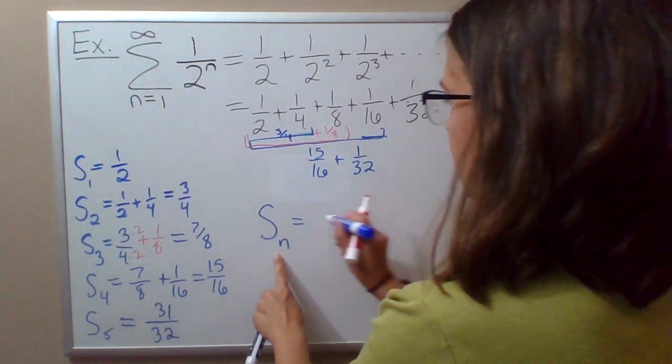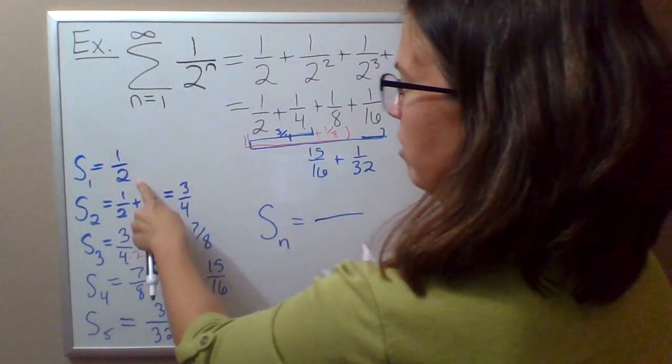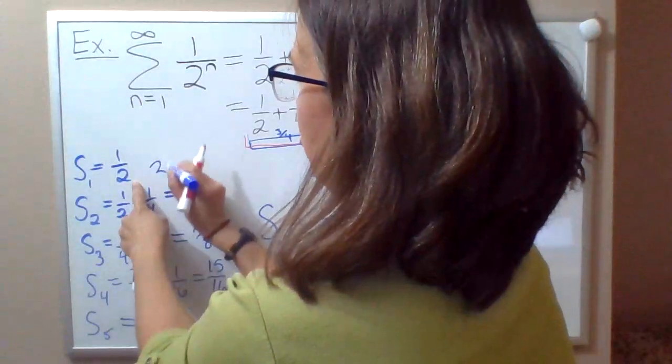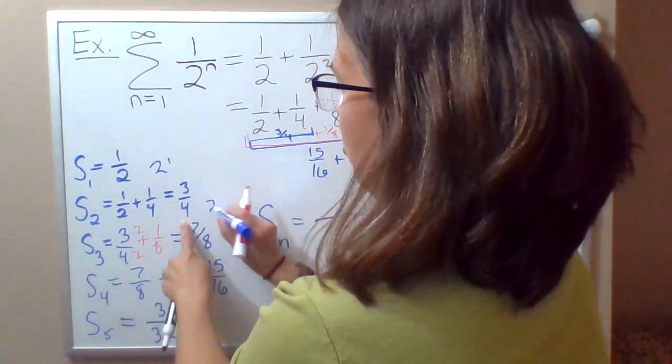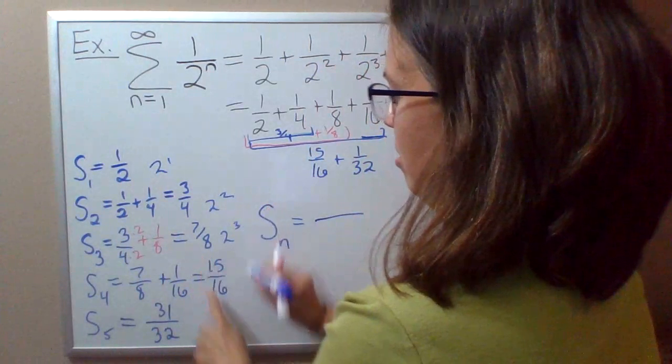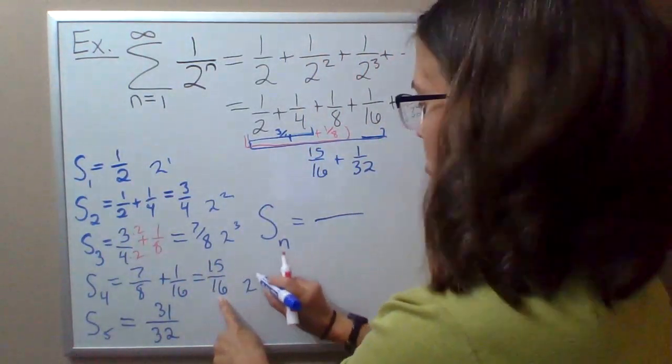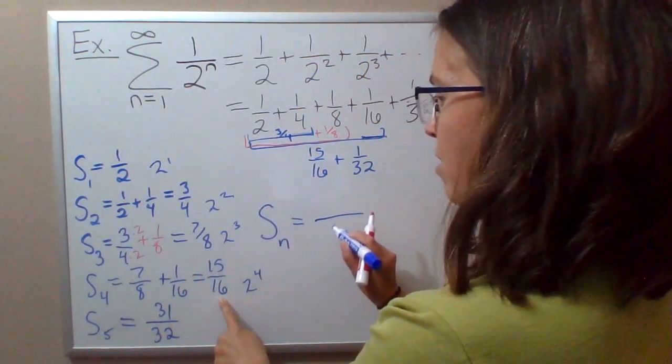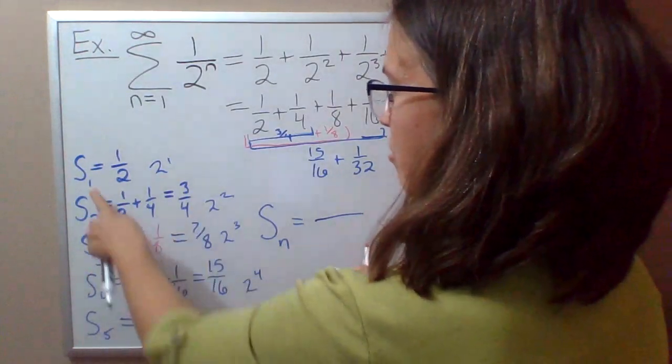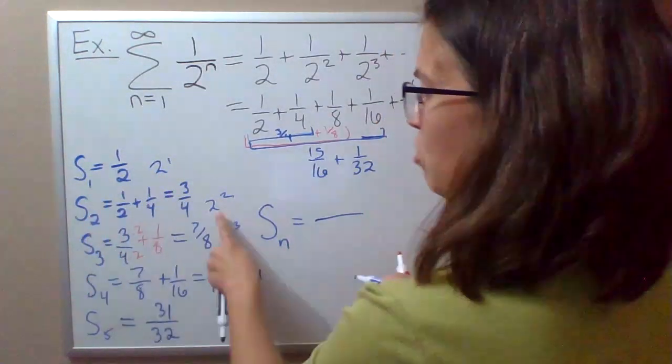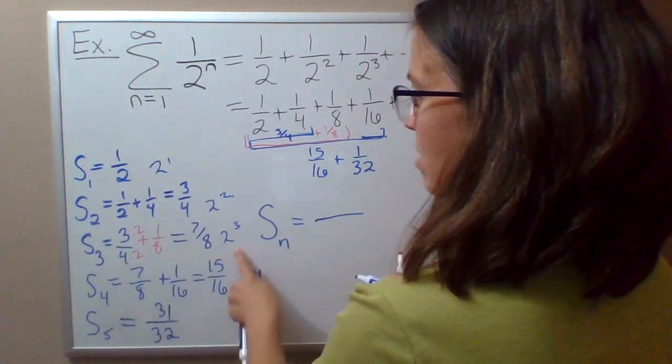The denominator pattern: this is 2 to the first in the denominator, and then 2 to the second, and then 2 to the third, and then 2 to the fourth. So for s1, it's 2 to the first; for s2, it's 2 to the second; for s3, it's 2 to the third. So the denominator is 2 to the n.